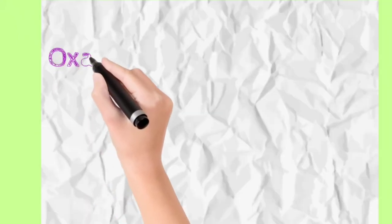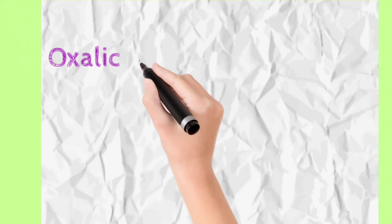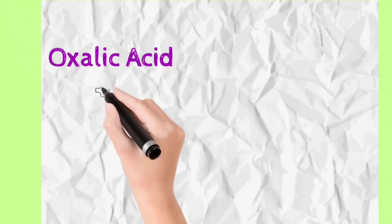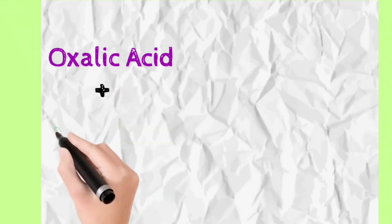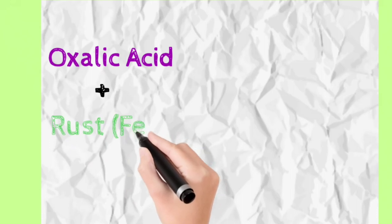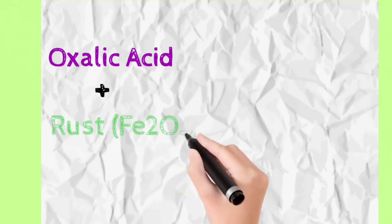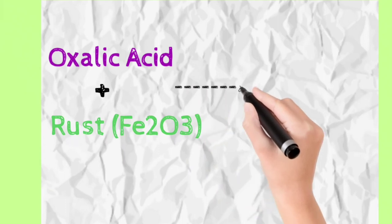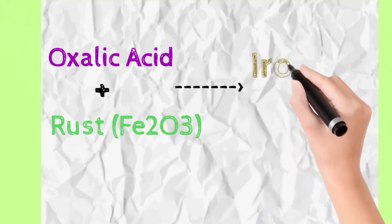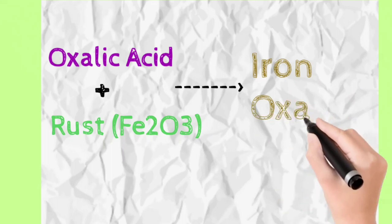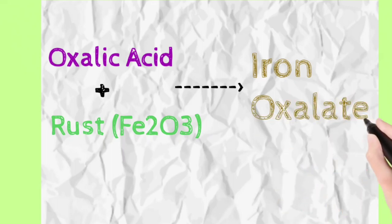How does this work? Oxalic acid combines with rust - Fe2O3, iron oxide. After this reaction, we get a salt called ferrous oxalate. This ferrous oxalate is water soluble, meaning when we pour water on it, it dissolves and washes away.